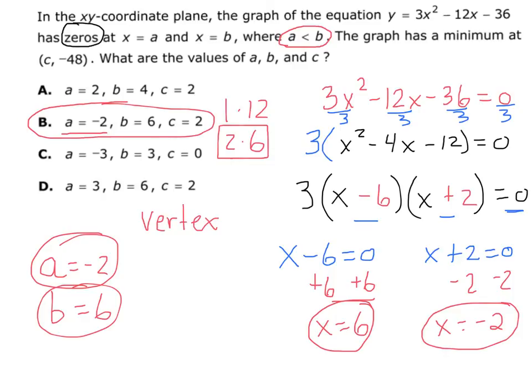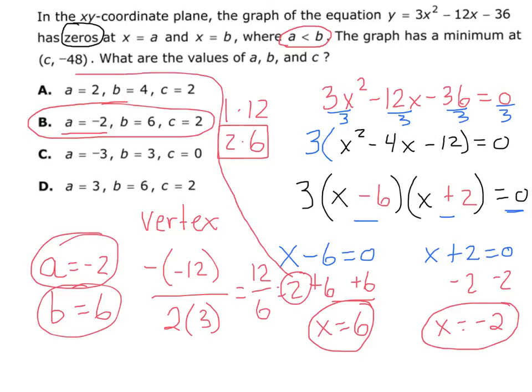Remember, the vertex is negative b over 2 times a, and so that's 12 over 6, which equals 2. And so in this case, c is going to be 2.